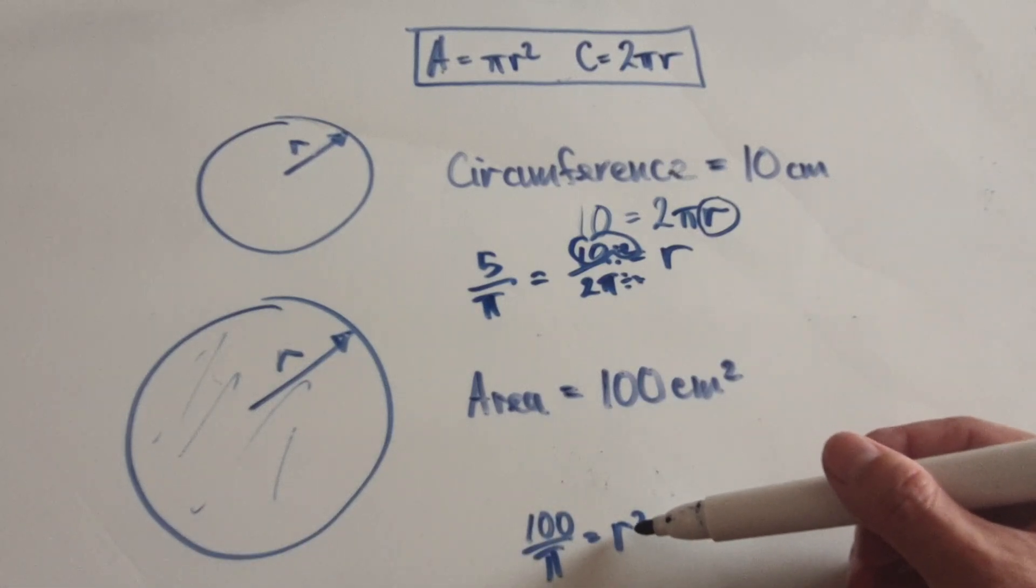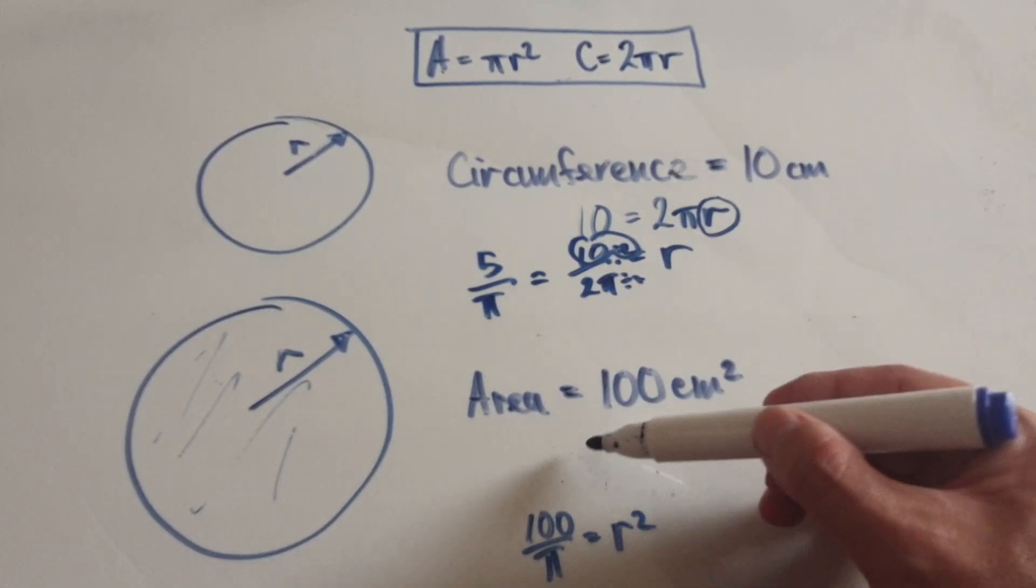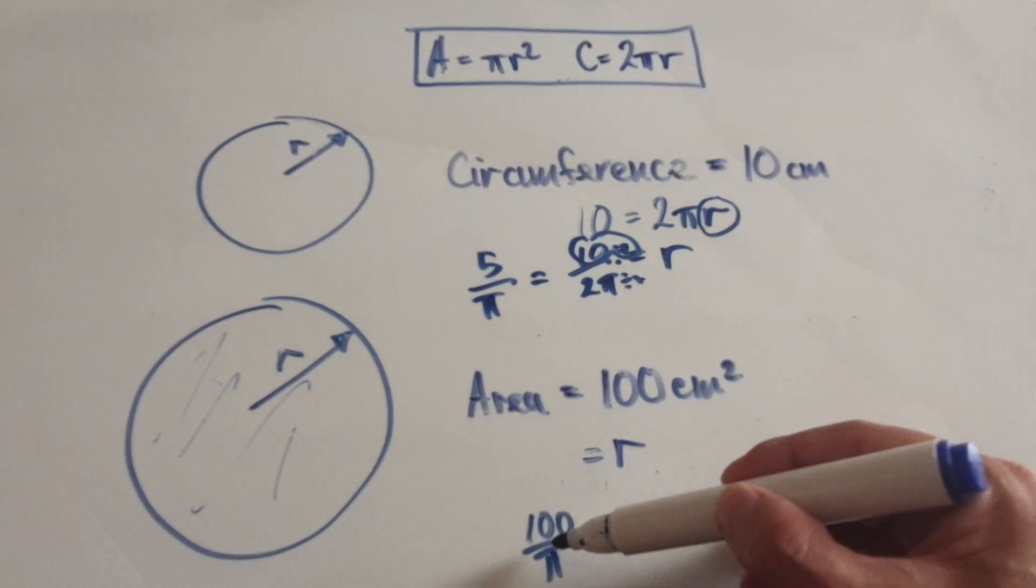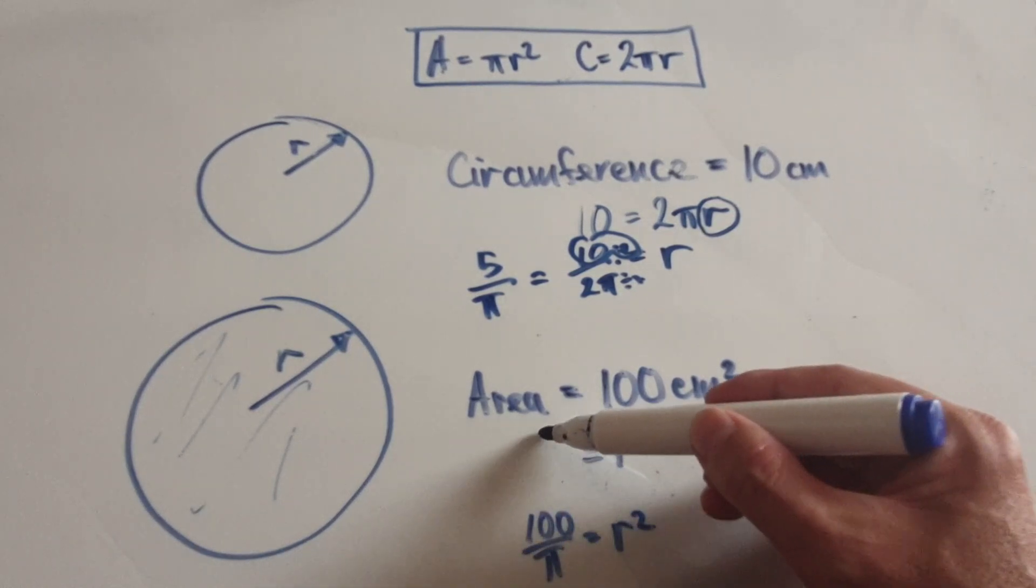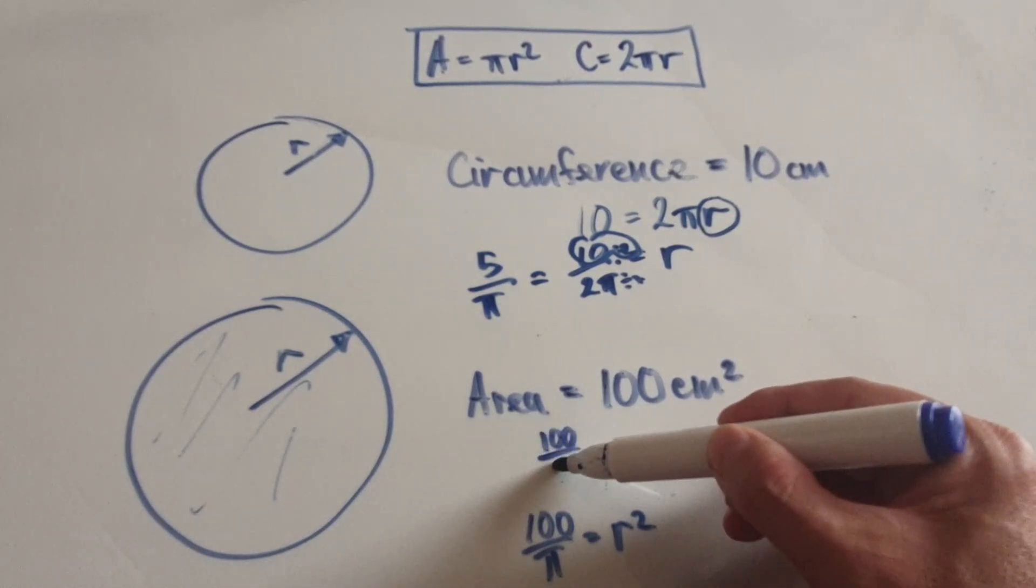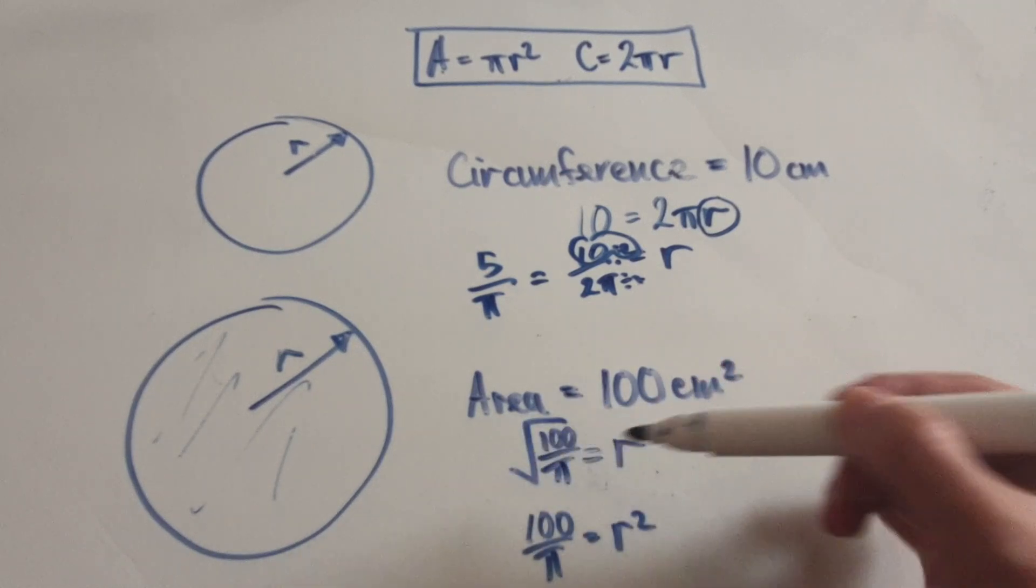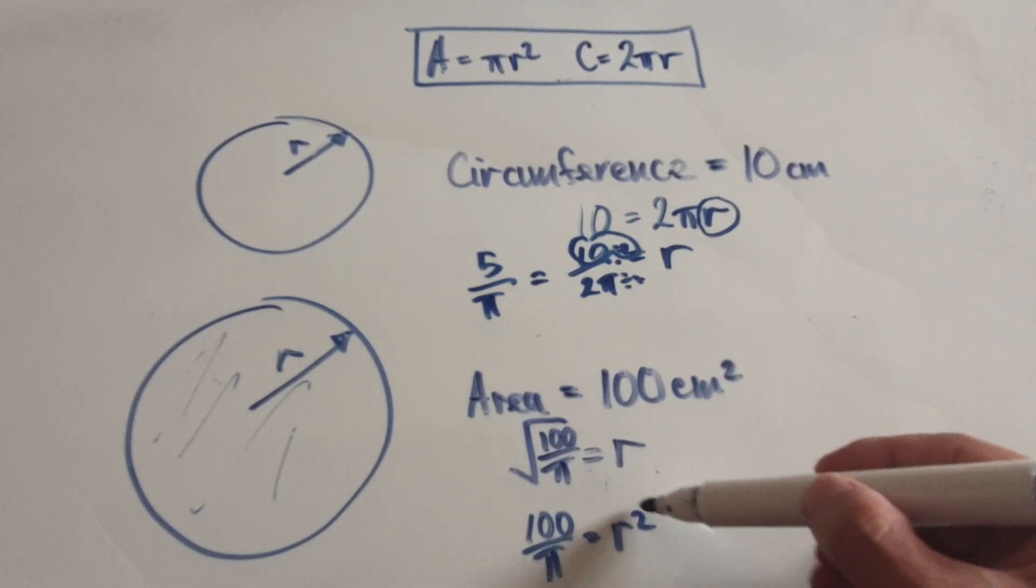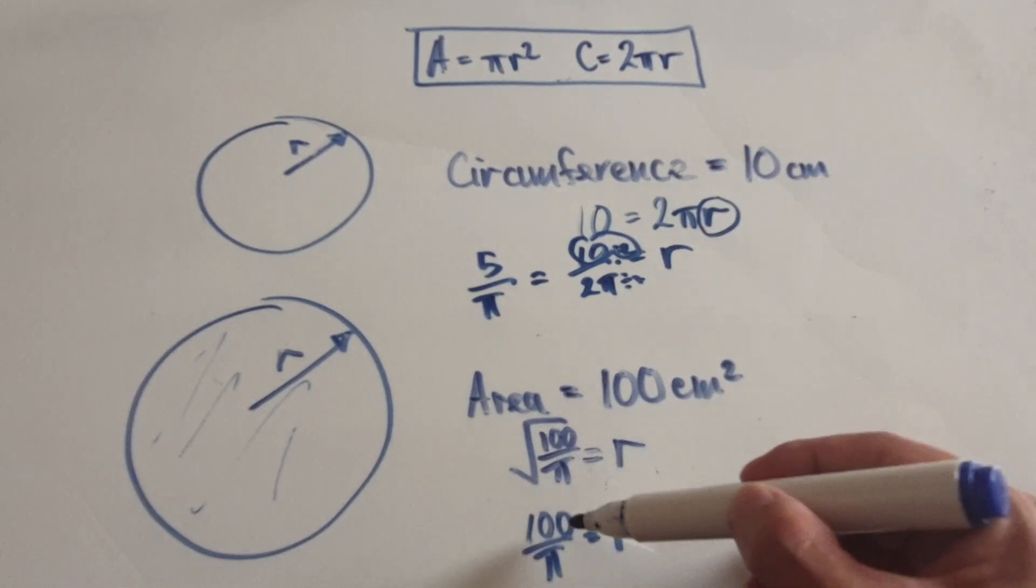Square root both sides to get r on its own. Square root the right hand side, that would be r. Square root this: you're square rooting it, so from here you square root the right hand side that would give you r.